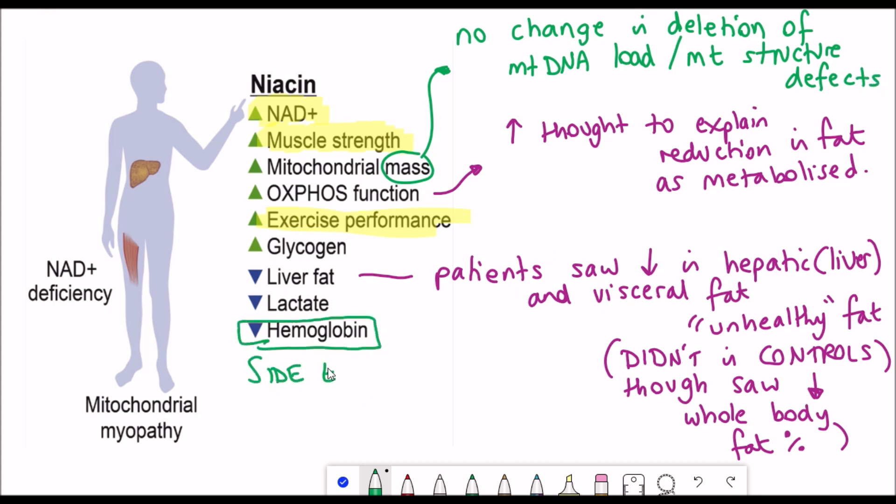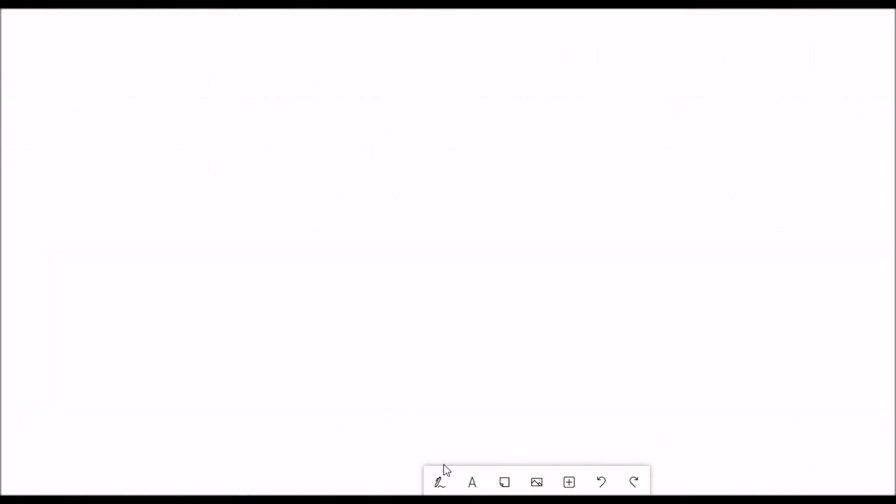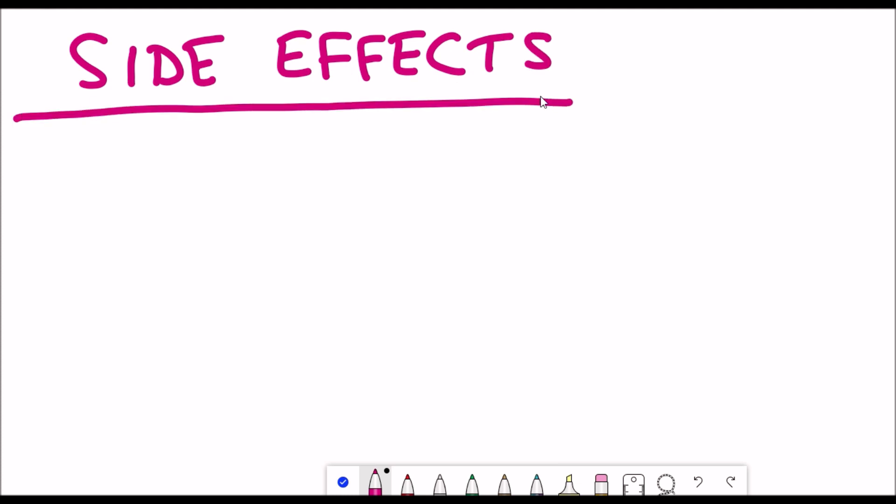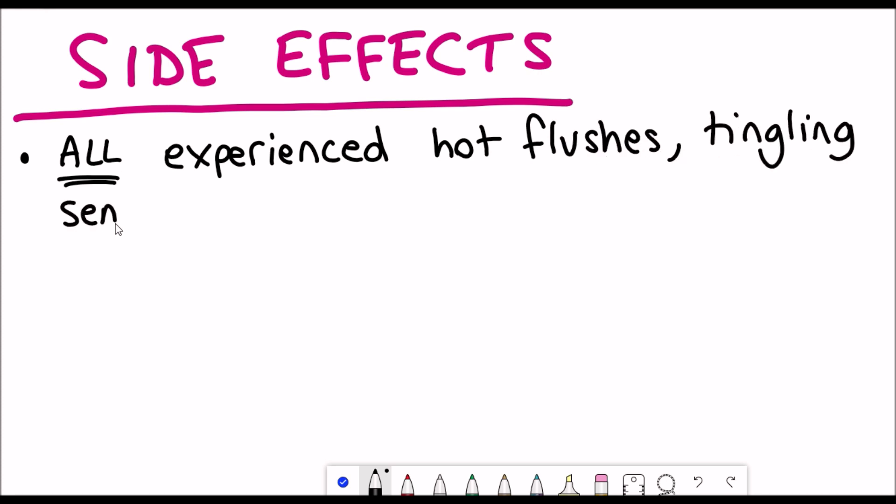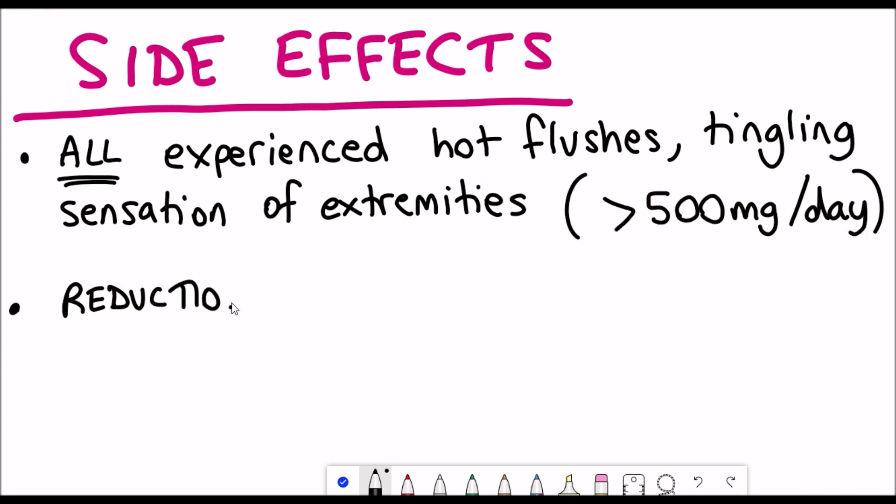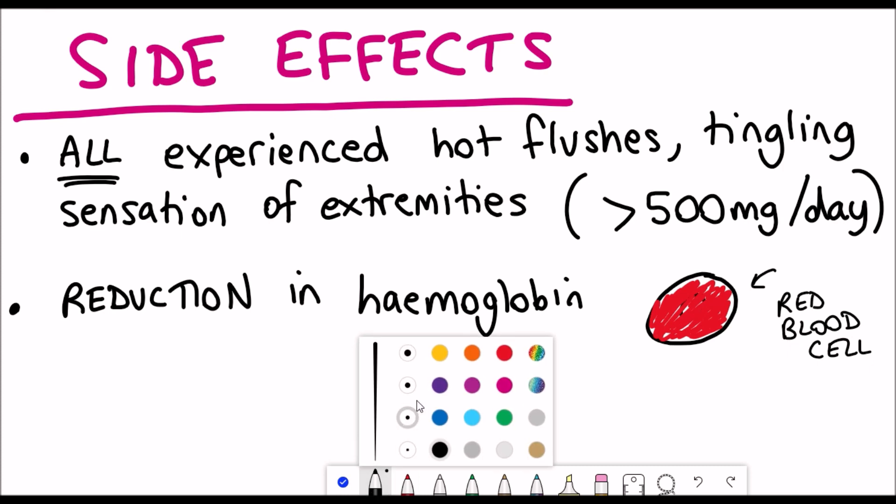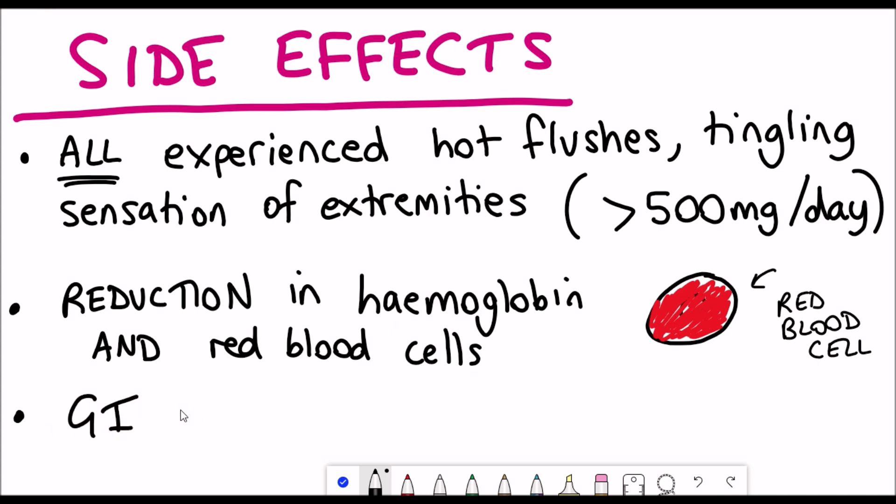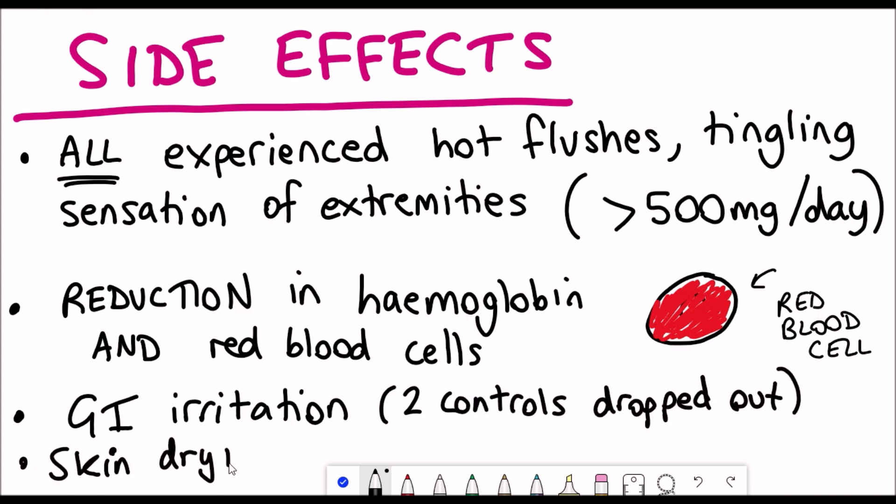So besides these positive effects that they saw, there were also some side effects reported, one of which is the reduction in hemoglobin. Side effects seen in all of the patients included hot flushes and a tingling sensation of extremities when they were taking more than 500 milligrams per day of niacin. They also saw a reduction in hemoglobin, which is the oxygen carrying compound that's found in red blood cells that delivers oxygen around your body. And they also saw a decrease in the red blood cell number. This is important to consider for the longevity of these studies. They also saw gastrointestinal irritation such that two controls actually dropped out. And then other side effects reported included skin drying and flatulence.